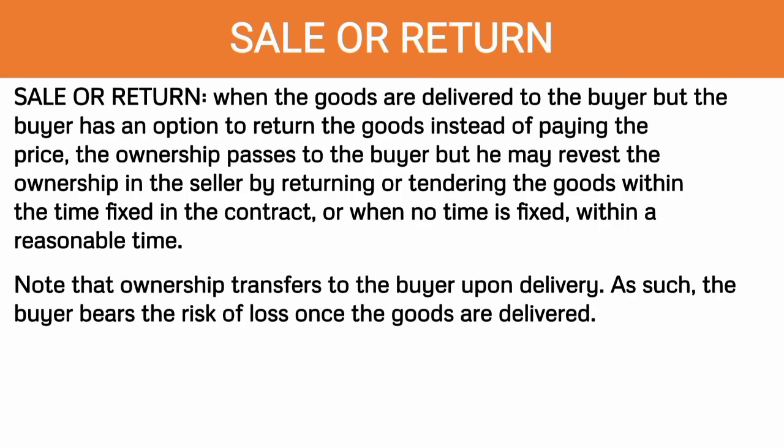Now, this is also where the importance of distinguishing a sale or return from a sale on approval, trial, or satisfaction comes in, because the transfer of ownership and the transfer of the risk of loss will depend on the type of sale. In a sale or return, the goods are delivered to the buyer, so the buyer becomes the owner upon delivery — because there is a sale.